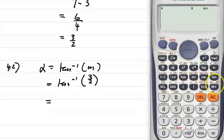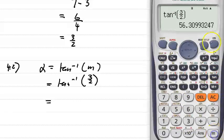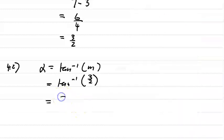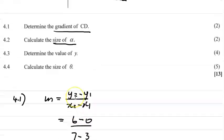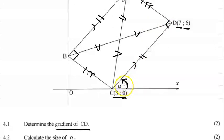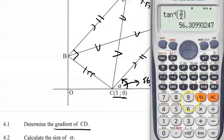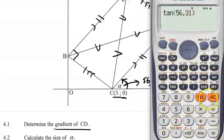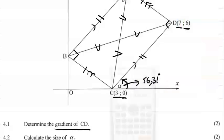So alpha = tan⁻¹(3/2). Putting that into the calculator: shift tan of (3/2) gives us 56.31 degrees. Conversely, if you were given the angle of inclination as 56.31° and asked to find the gradient, you would calculate tan(56.31°) ≈ 1.5, which is 3/2 — the same result.